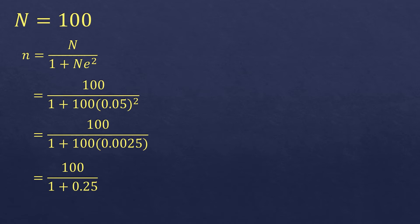Then you're going to add 1 plus 0.25, that is 1.25. Then you're going to divide 100 divided by 1.25, it will be 80. So that means the minimum number of samples for this study must be at least 80.